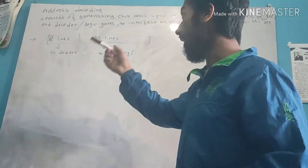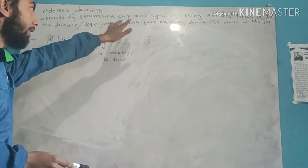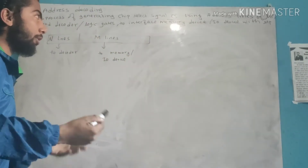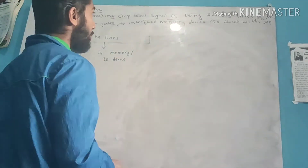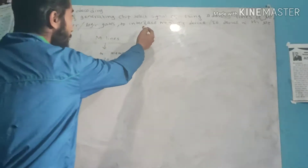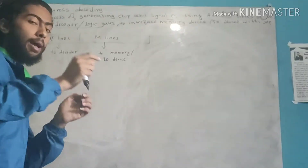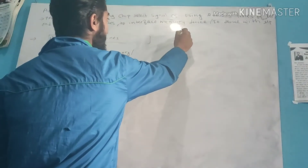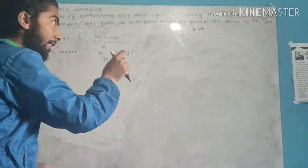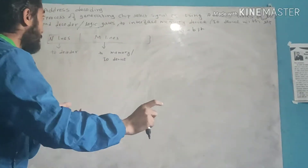Today I am going to talk about address decoding. Address decoding is the process of generating the chip select signal. The chip select signal can be generated by using address lines of the microprocessor, decoders, and logic gates to interface a memory device or I/O device with the microprocessor.